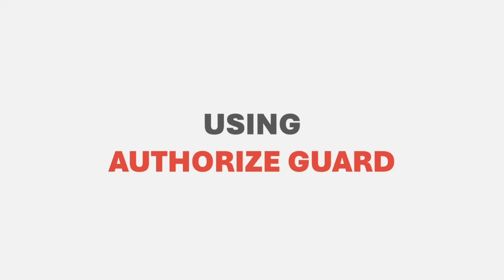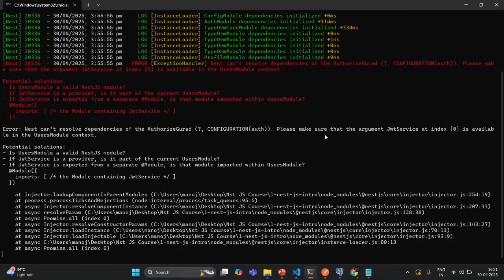In the last lecture, we completed the implementation of AuthorizeGuard, which we are going to use to protect resources from unauthorized access. Currently, we are seeing an error in the terminal. While building our NestJS application, NestJS is complaining about this error and says it can't resolve dependencies of AuthorizeGuard.